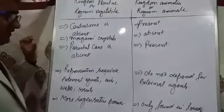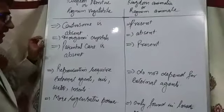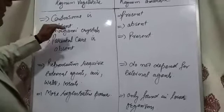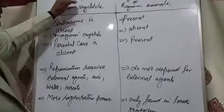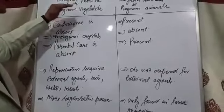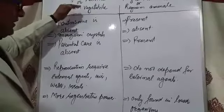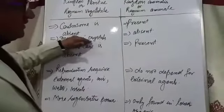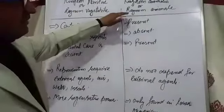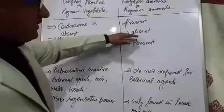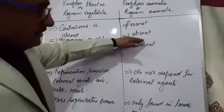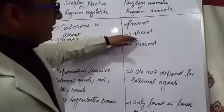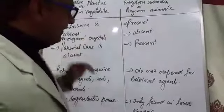The second point is inorganic crystals. Inorganic crystals are present in Kingdom Plantae because they prepare and store inorganic crystals, while in case of Kingdom Animalia they are almost absent.